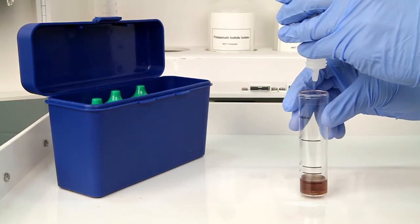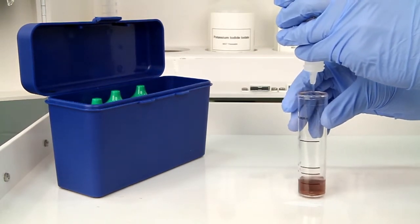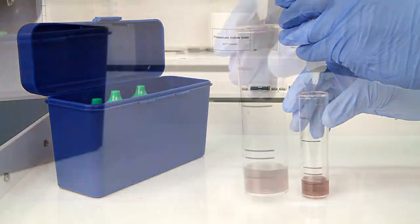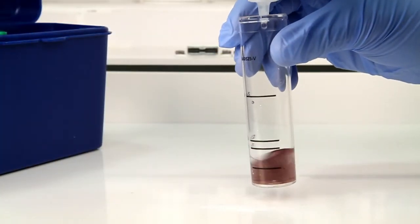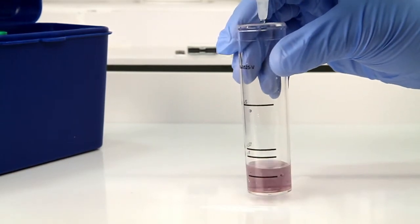The bottle contains a dropper tip, so it's important to hold the bottle vertically to get a consistent drop size. After the addition of each drop of titrant, swirl the vial to make sure the sample is properly mixed. Count the number of drops during this step.